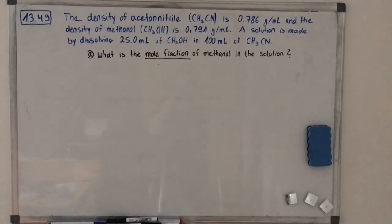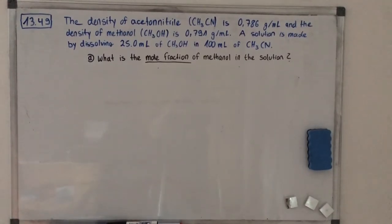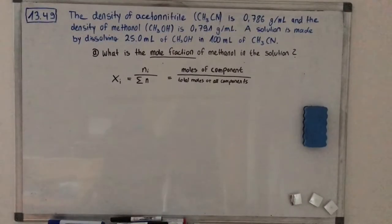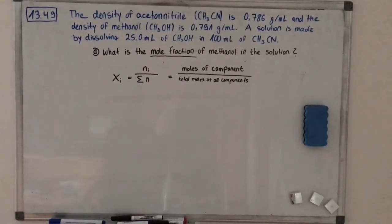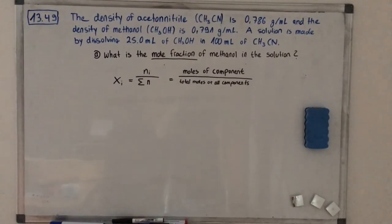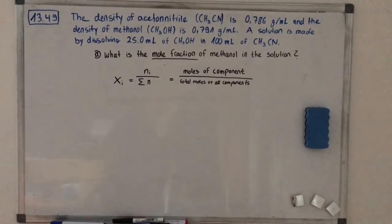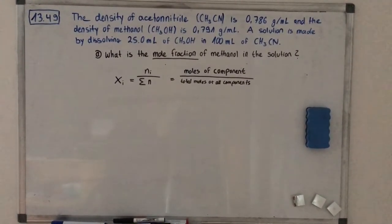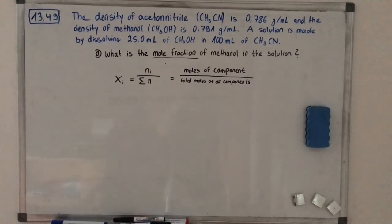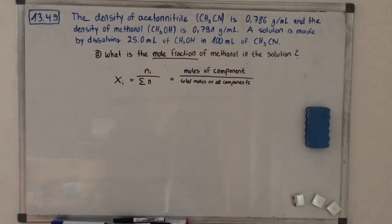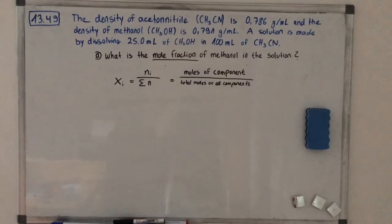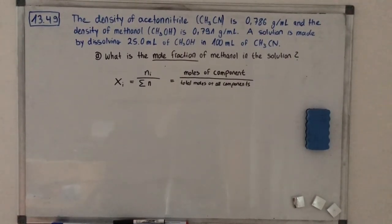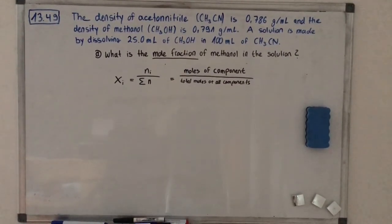Let's start with part A: what is the mole fraction of methanol in the solution? We can use the formula that the mole fraction is the moles of the component divided by the total moles of all components. To calculate the mole fraction of methanol, we must first determine the number of moles of methanol and acetonitrile.